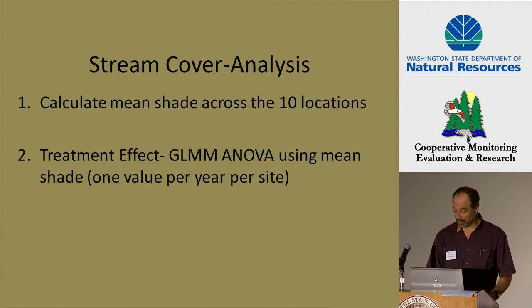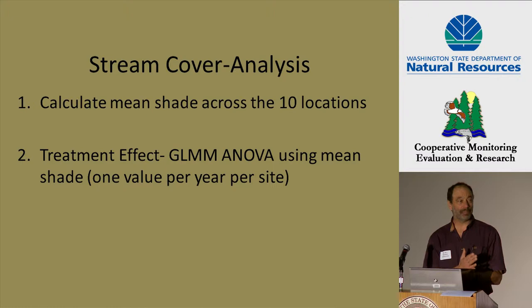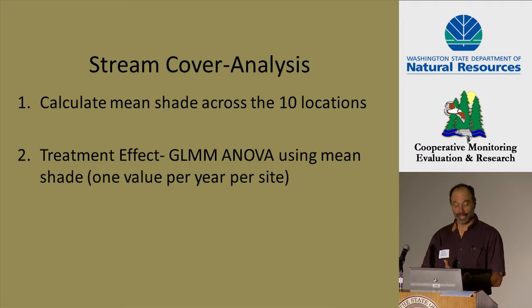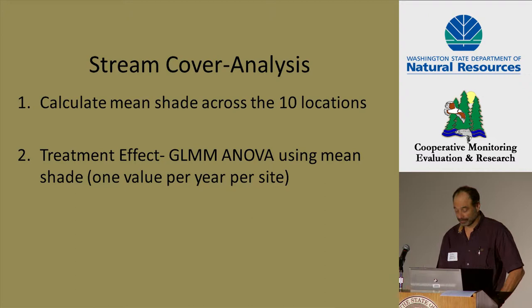For the stream cover analysis, we simply took the ten measurements, calculated a mean for each site for each year, and then fed that into a generalized least squares mixed-effects model analysis of variance. Effectively we had one value per site per year — about two observations for each site pre-harvest and two observations post-harvest.